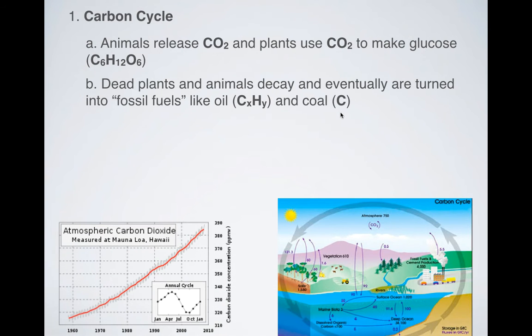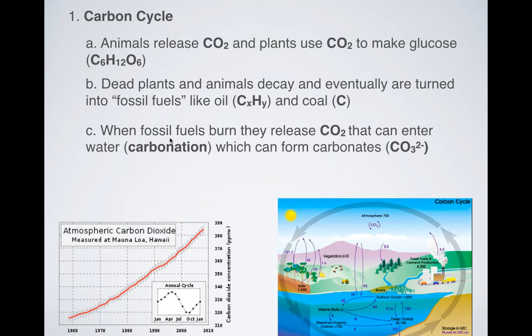Now when those fossil fuels are burned in the future, that releases CO2 into the atmosphere. And then when that mixes with water through a process called carbonation, that can form carbonates. So carbonates have this structure, CO3 with a two minus. Now don't worry about the negative signs. Instead, just focus on the actual elements.